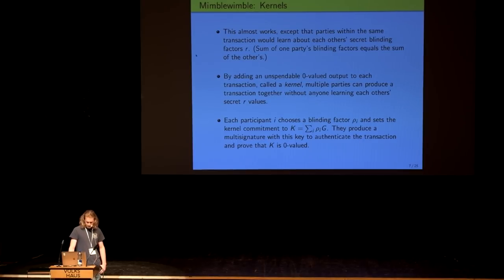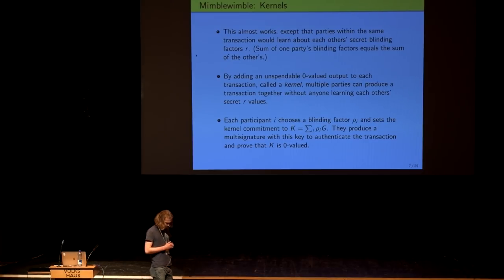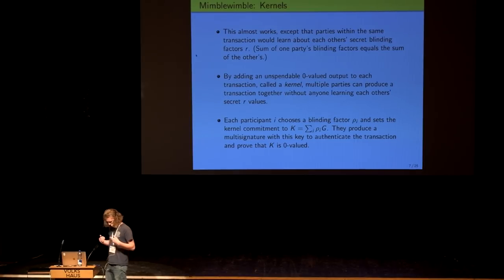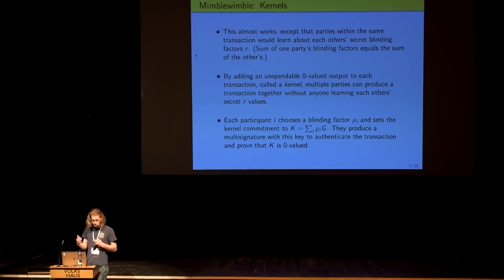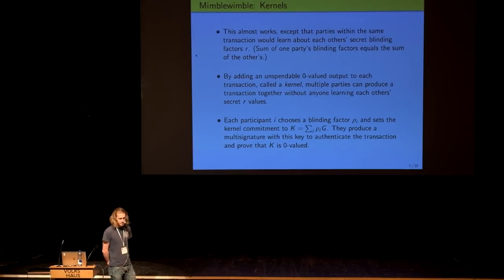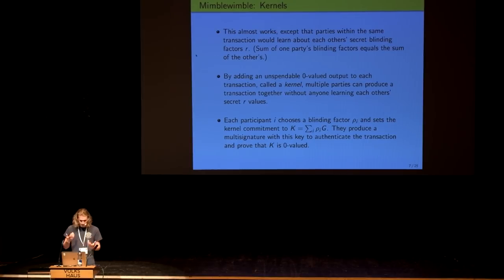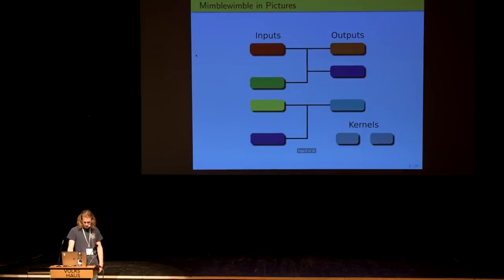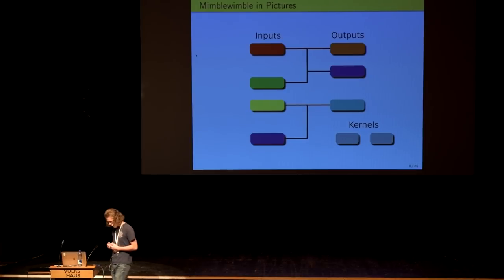So the way Mimblewimble solved this is by adding a special zero-valued output called the kernel. The kernel cannot be spent, which means that to the extent that a sum of blinding factors and a kernel blinding factor are known, that's useless to somebody trying to create a transaction. They have to know a sum of actual spendable outputs. As a second feature, the kernel acts as a multi-signature key for all of the participants in the transaction. Because what it is really, it's a sum of all of the blinding factors from each participant then multiplied by some generator G here. And you can think of this in two ways. One is as a sum of Peterson commitments as a zero-valued output. The other way is as a multi-signature key. And these two things are complementary and that's sort of the magic of Mimblewimble.